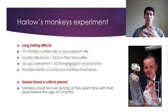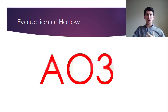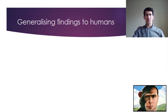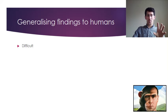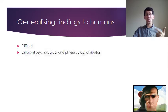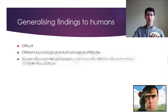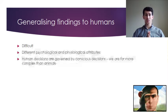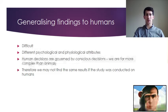A key evaluation point — applying also to Lorenz's study — is that it's very difficult to generalize findings from animal studies to humans. Psychologically, humans are far more advanced and complex; physiologically, we have a completely different biological makeup. Human decisions are governed by conscious decisions, making it very difficult to generalize these findings, meaning we might not find the same results if the study were conducted on humans.